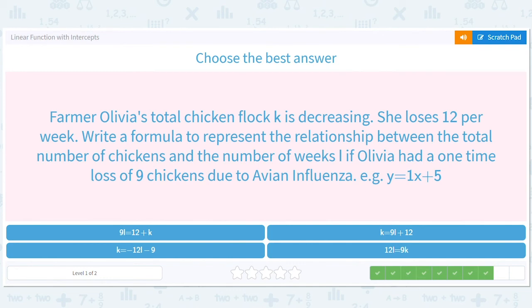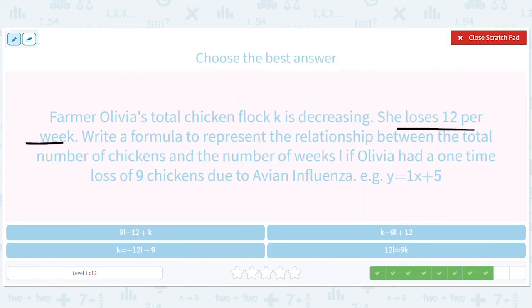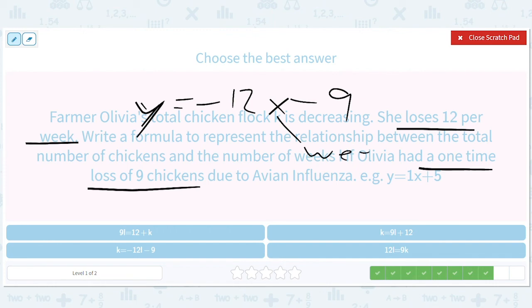Farmer Olivia's total chicken flock K is decreasing. She loses 12 per week. Loses 12 per week. Y equals negative 12X. One time loss of nine chickens. So minus nine. Y equals negative 12X minus nine. So this is weeks. Every time you put in a week there, it goes down another 12. And then this is the chicken flock. So chicken. And now we translate.